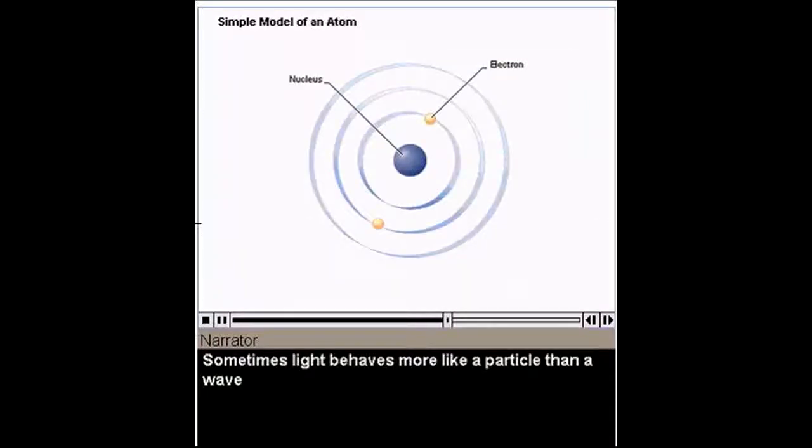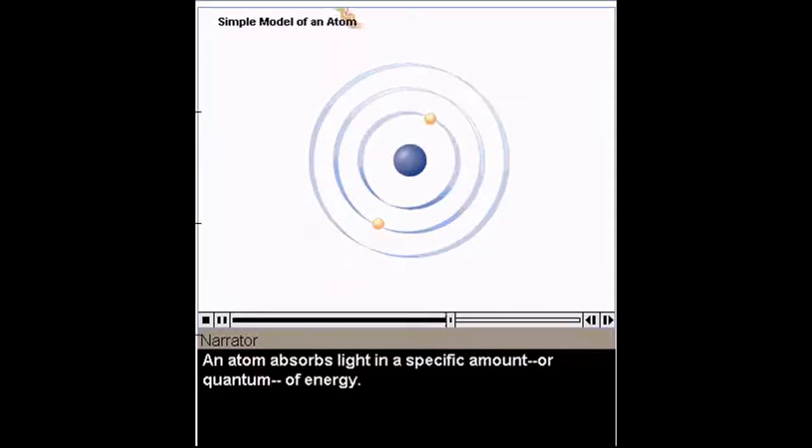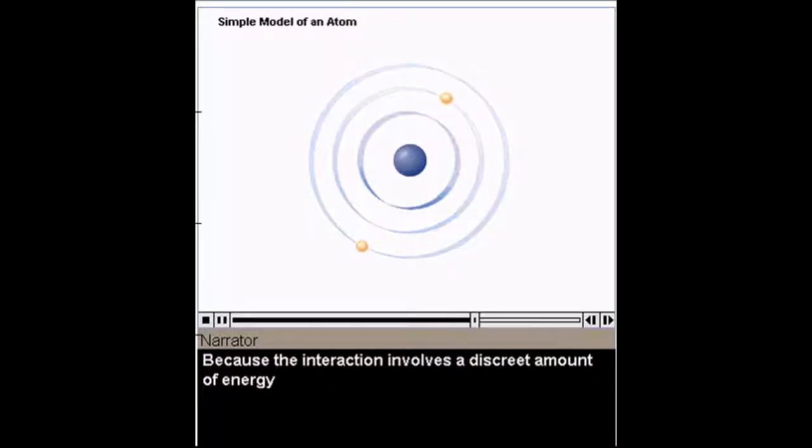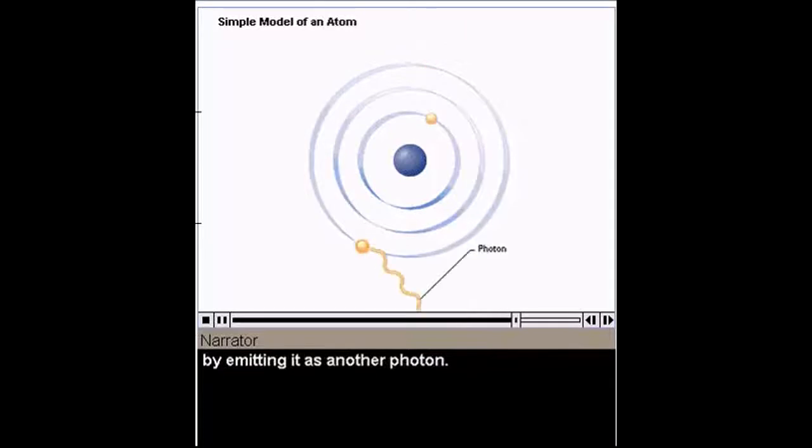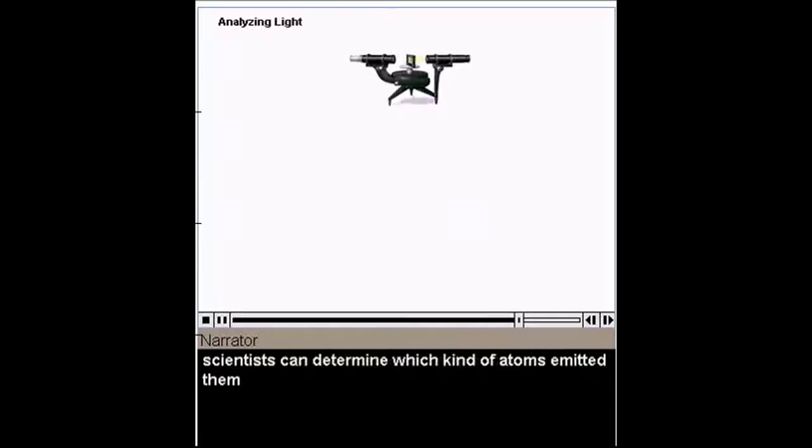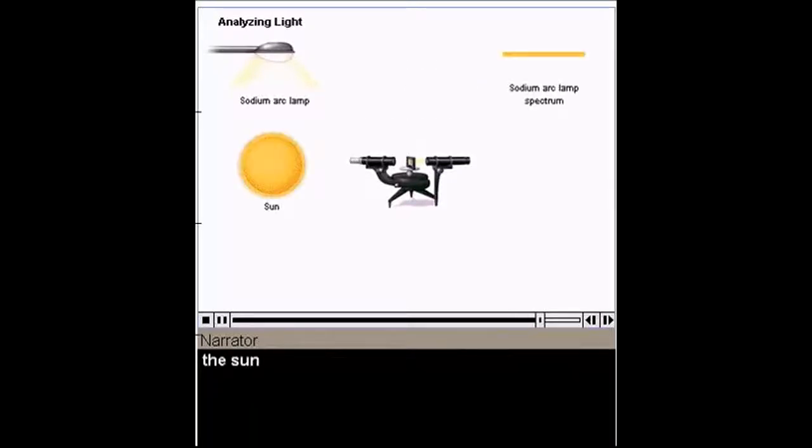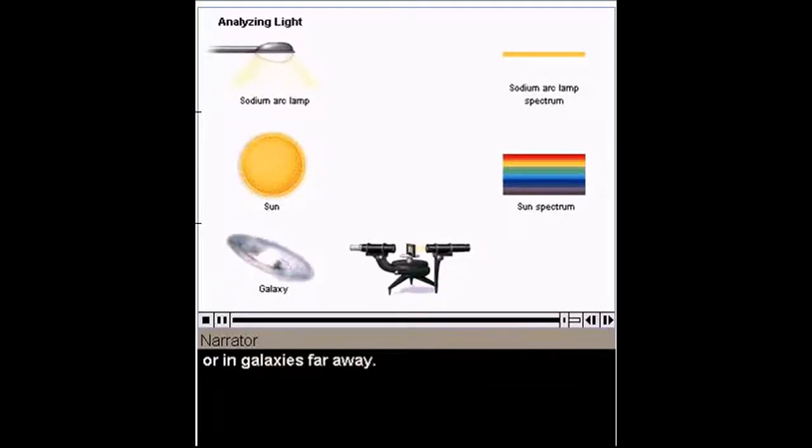Sometimes light behaves more like a particle than a wave, especially when interacting with atoms. An atom absorbs light in a specific amount, or quantum, of energy. Because the interaction involves a discrete amount of energy, we infer that the light is behaving like a particle, or what we call a photon. The excited atom can release its extra energy by emitting it as another photon. By measuring the frequency of photons, scientists can determine which kind of atoms emitted them, and whether they originated on the Earth, the Sun, or in galaxies far away.